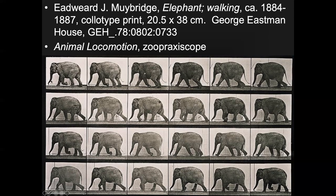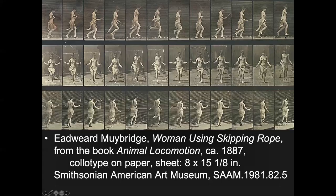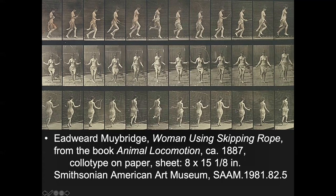Students often try to figure out where the sequence starts and which way it goes — most decide it starts in the top right corner. You can see a grid in the background, ostensibly for scientific purposes. He also included people in the book, since people are animals too, and had them nude to be scientific. Some of the plates, though — like a nude woman jumping rope or a woman pouring water over another — were probably bought by some people for other reasons.